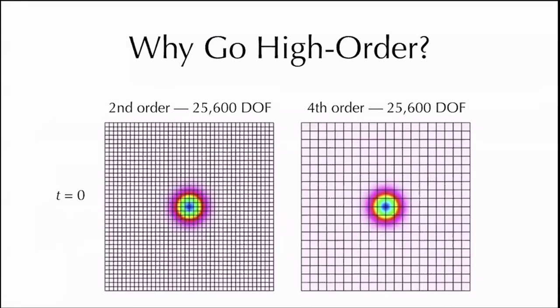To give a slightly more concrete example of high order and to back up some of those claims with regards to resolving power, here we have two otherwise identical simulations in terms of degree of freedom count with an isentropic Euler vortex in a free stream. On the left, we're going to advect the simulation using a second order scheme with 25,600 overall degrees of freedom. On the right, we're going to advect this vortex using a fourth order accurate scheme with the same number of degrees of freedom.